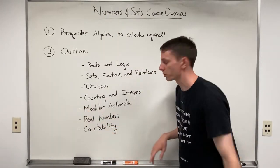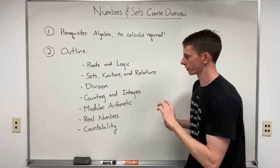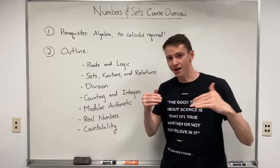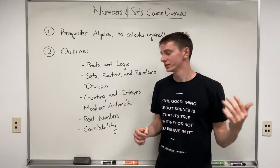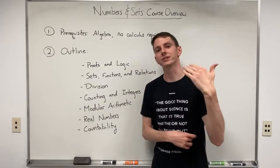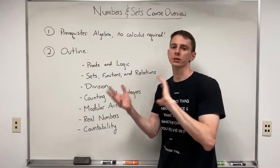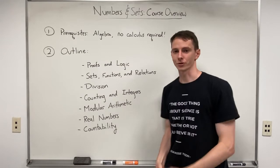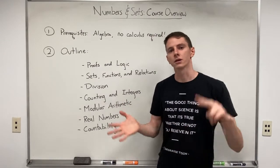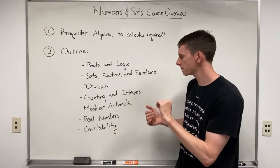Then after that, we're going to go on to counting and integers, where it turns out counting in math can be surprisingly difficult. So we're going to first go through some counting techniques that can help us count. Basically, we're going to talk about indicator functions, permutations, combinations, and stuff like that.